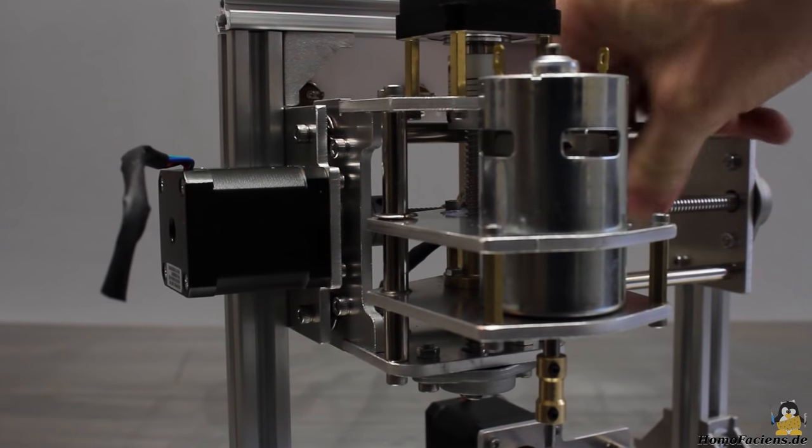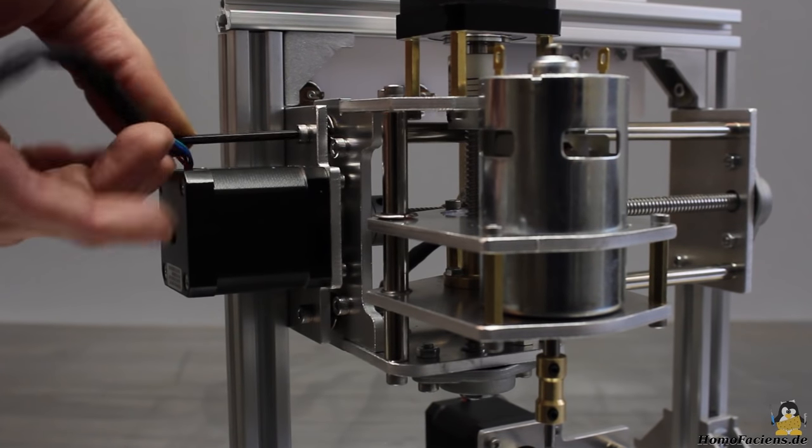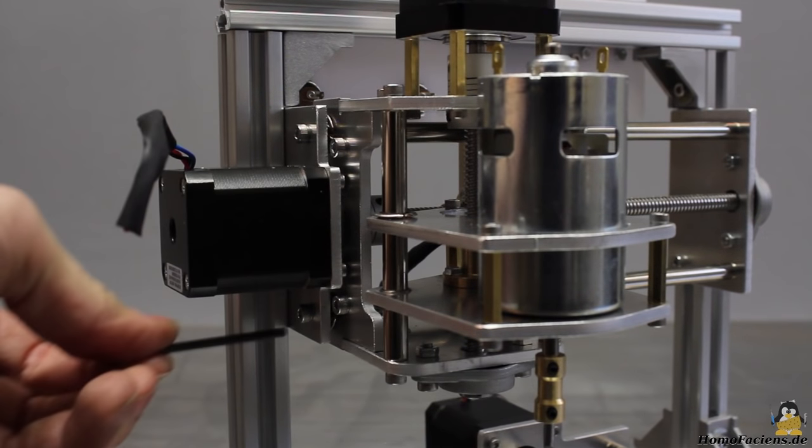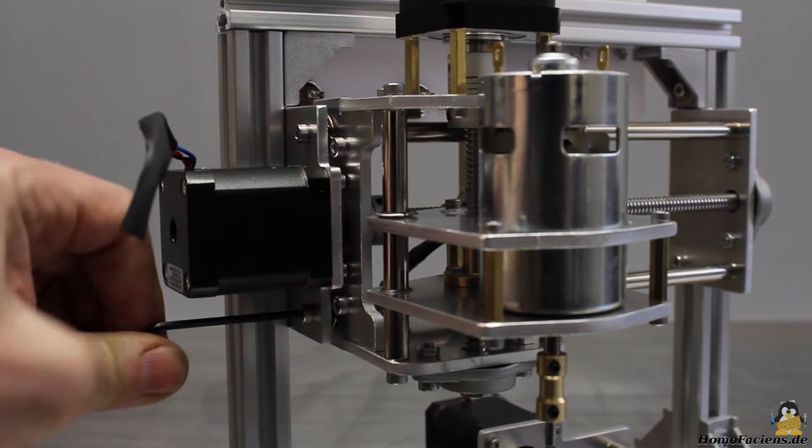Repeat that procedure at the other end of the X axis as well as on the Y and Z axis so that the carriages move as smoothly as possible along the guiding rods.